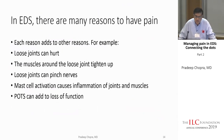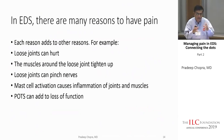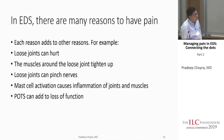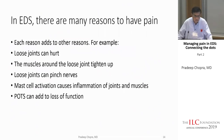Patients with EDS have many reasons to have pain. Loose joints can hurt. When a joint is loose, the muscles around it tighten up — classic example is the shoulder. A loose joint can also pinch nerves. On top of that, mast cell activation syndrome causes inflammation of the joints and muscles, and POTS or dysautonomia adds to the loss of function. Each one of these has to be looked at separately.